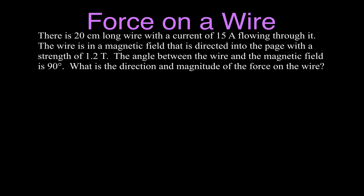Let's do a quick, relatively straightforward problem. We want to know the force on the wire. There's a 20-centimeter-long wire, and that entire 20 centimeters is carrying a current of 15 amperes. That section of wire is inside a magnetic field directed into the page, with a strength of 1.2 teslas. The angle between the wire and the magnetic field is 90 degrees.